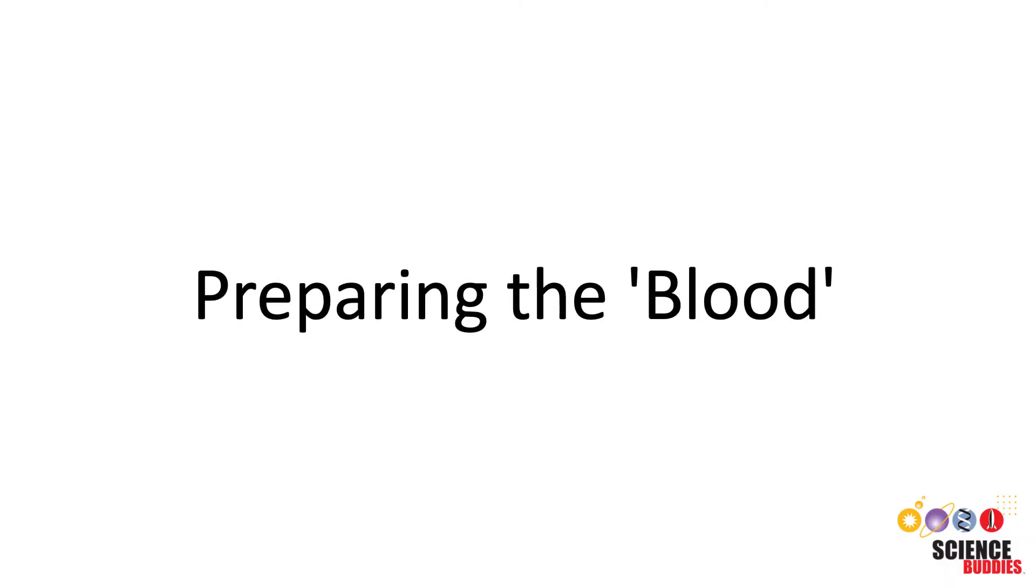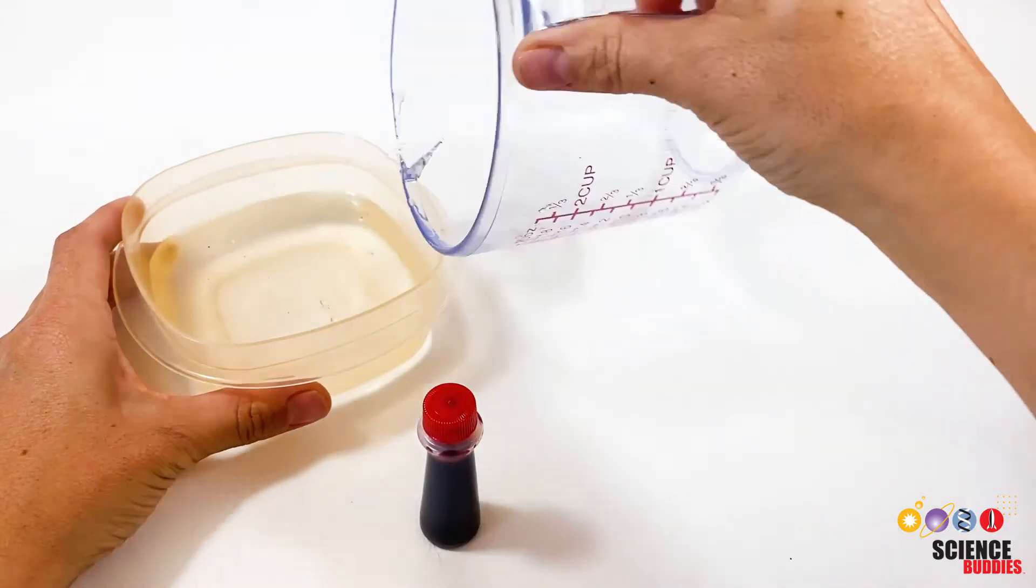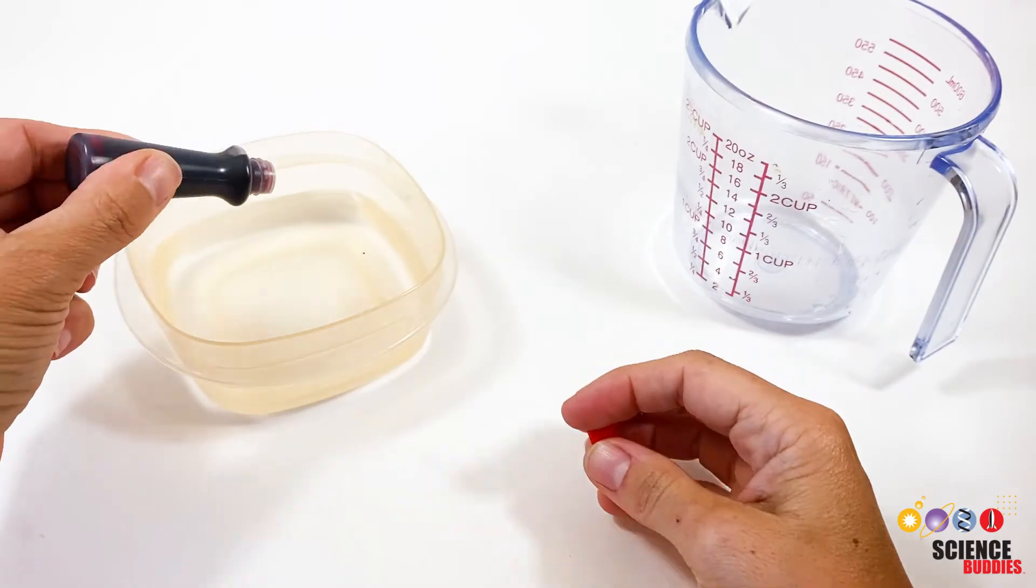Next, prepare the red colored water that represents the blood. Add a few drops of red food coloring to a container of water.